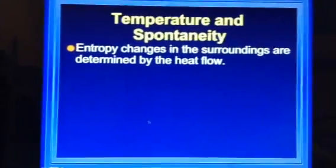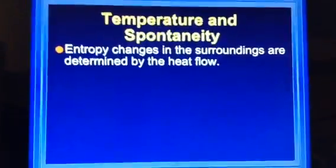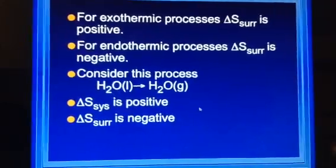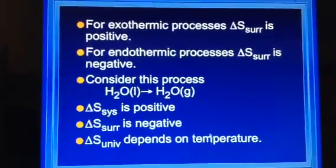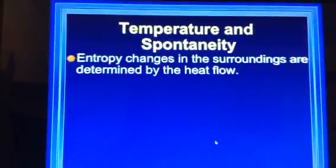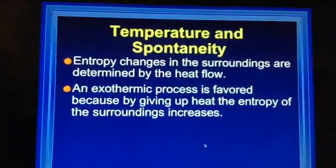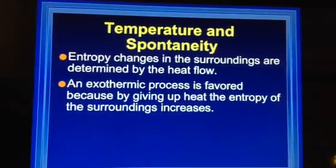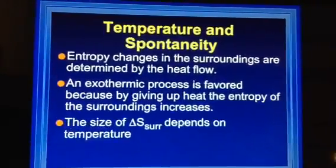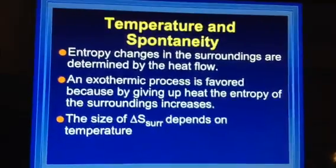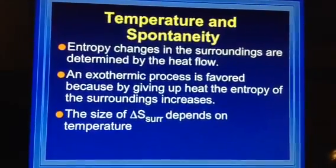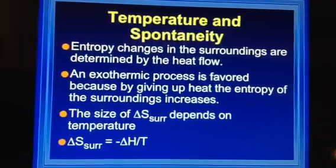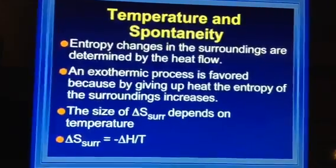So entropy changes in the surroundings are determined by the flow of heat. Exothermic process is favored because by giving up the heat of entropy, the surroundings increase and the size of the delta S surroundings depend upon the temperature. Again, you can refer to your textbook about that. So your delta S of your surrounding is equal to negative delta H over T.